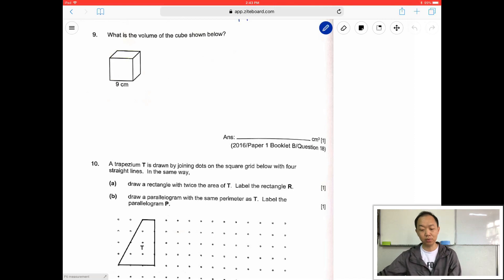So the first one, what is the volume of the cube shown? For this particular question, there's no need for a calculator. To find volume is length times breadth times height. So in this case, it's 9 times 9 times 9. And this is paper 1, so you got to do your own multiplication. So 9 times 9, I think it's pretty easy.